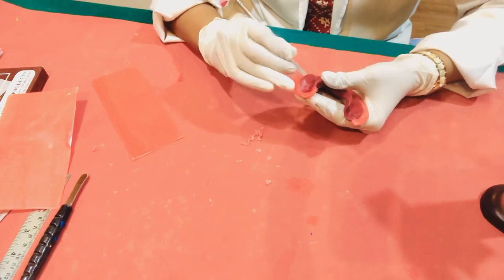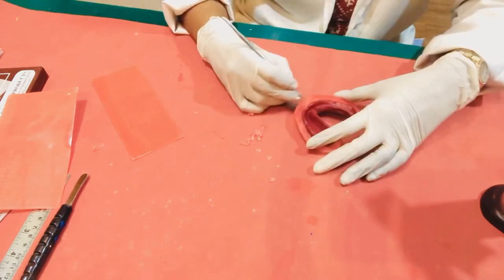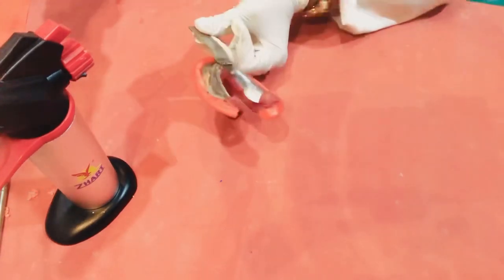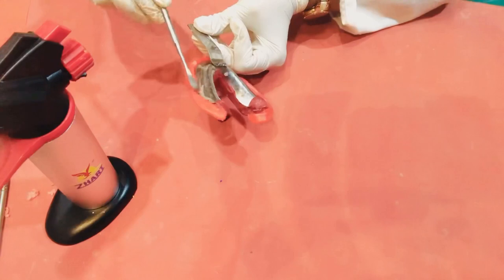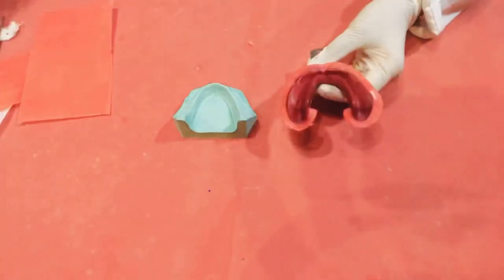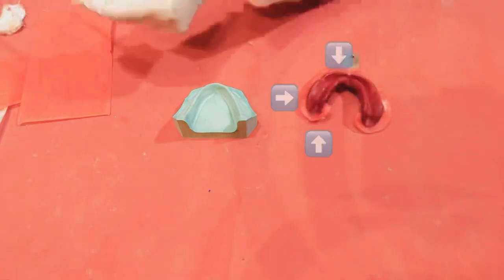You can remove any excess of wax and contour it with a lecron carver or seal the beading wax from both the sides. You can see that I've completed the beading on the labial, buccal and around the retromolar pad area.